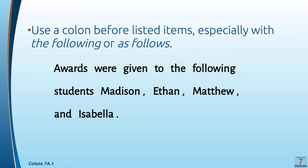Now let's talk about the colon. The semicolon is a dot on top and a comma on the bottom. A colon is two dots. So we use the colon before listed items, especially with the words 'the following' or 'as follows.'